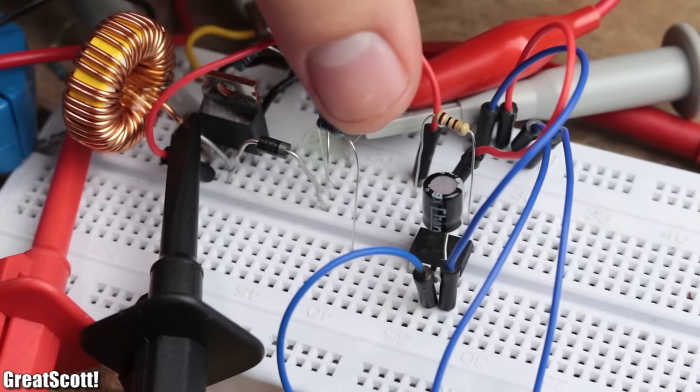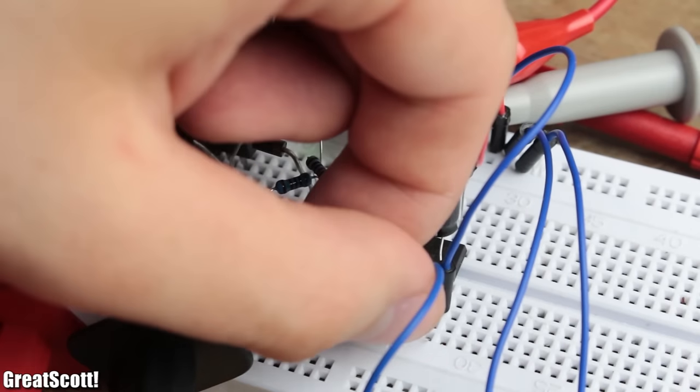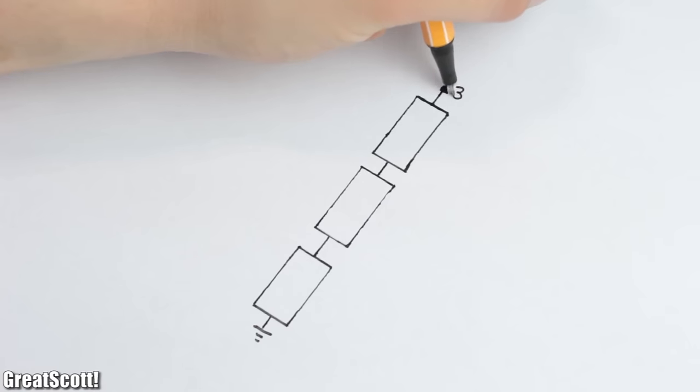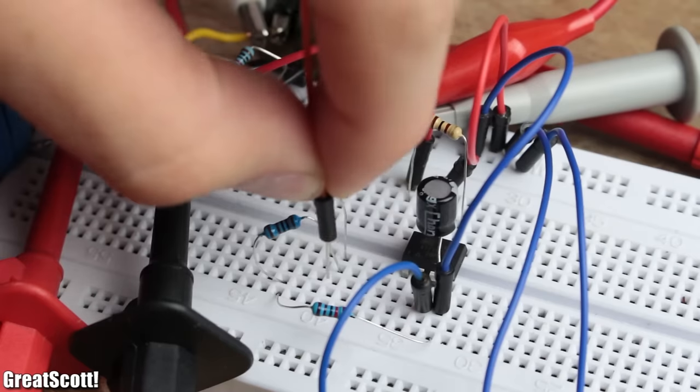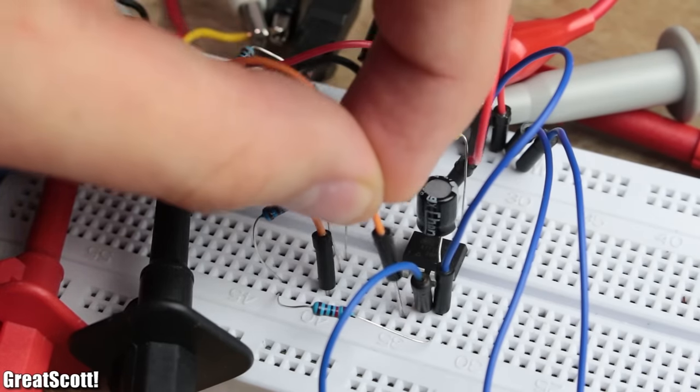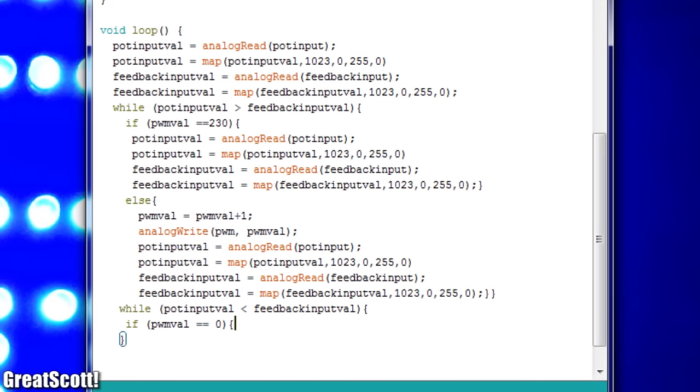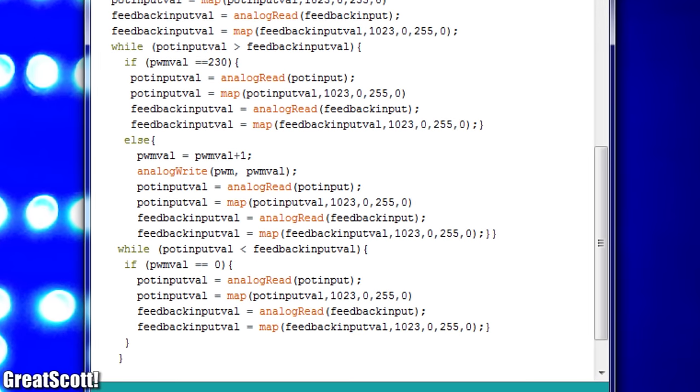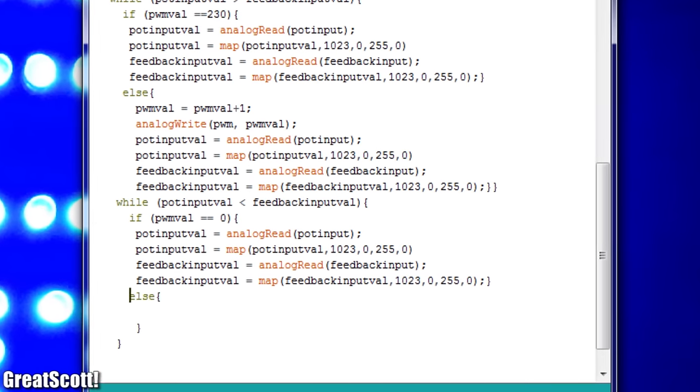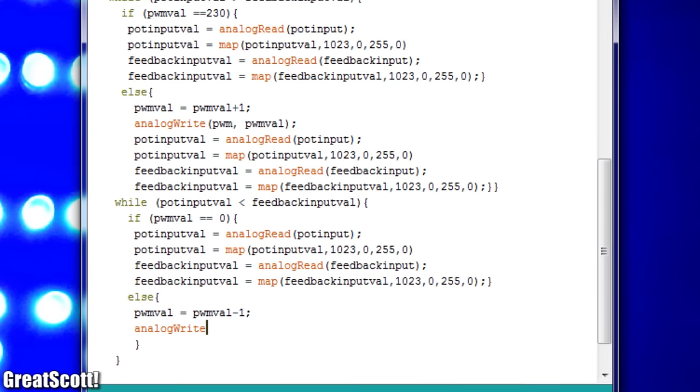To fix that, we need a feedback, which I created with a voltage divider that turns my defined maximum voltage of 30 volts into 5 volts, suitable for analog input A3 of the ATtiny. By changing the code just a little bit to increase or decrease the duty cycle according to a fixed voltage set by the potentiometer,